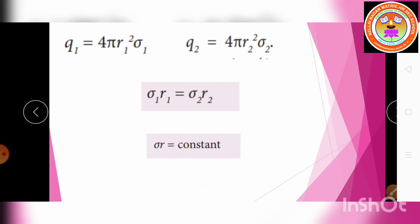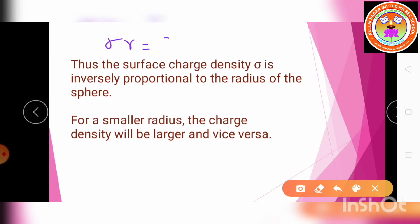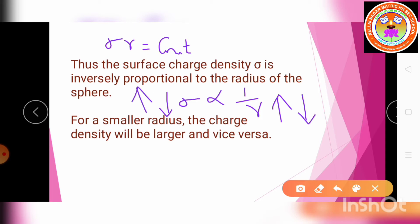Since σR = constant, the surface charge density is inversely proportional to the radius. When the radius increases, the surface charge density decreases. When the radius is smaller, the surface charge density increases — so for a smaller radius, the charge density is large, and for a greater radius, the charge density value is lesser.